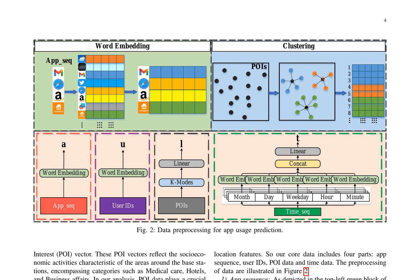The paper discusses the pre-processing of data for app usage prediction, focusing on the implementation of word embeddings, clustering techniques applied to points of interest data, and encoding temporal data. It explores methodologies for data selection and pre-processing, including the transformation of discrete app sequences into a continuous vector space using word embedding techniques. The specific embedding process is represented by the equation E = NN.Embedding(N, D), where E denotes the embedding matrix, N represents the total number of apps, and D is the dimension of the embedding vector. For each app in the sequence, the corresponding embedding vector is found from the embedding matrix using its ID, represented as V = E[i].